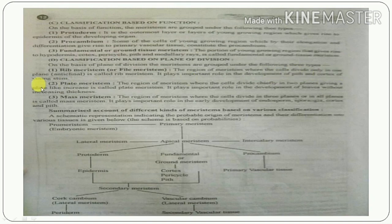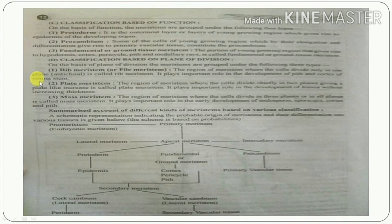The third type is mass meristem. As the term indicates, cells divide in three planes — all planes — giving rise to mass meristem. It plays an important role in the early development of endosperm, sporangia, cortex, and pith.